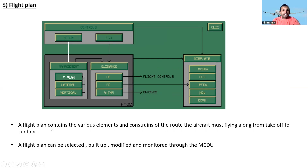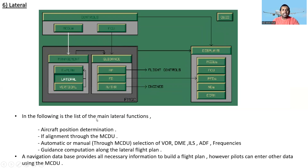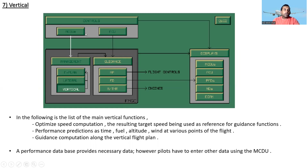A flight plan contains the various elements and constraints of the route the aircraft must fly, from takeoff to landing. A flight plan can be selected, built up, modified, and monitored via the MCDU. For the lateral functions, these include position determination and IRS alignment through the MCDU, and automatic or manual selection of VOR, DME, ILS, and ADF frequencies, plus guidance computations along the lateral flight plan. A navigation database provides all necessary information to build a flight plan; however, pilots can enter other data using the MCDU.